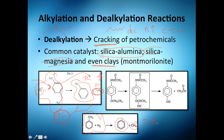Whether you do that conversion depends on the business. Toluene and benzene are both cheap, but if you can't sell enough toluene and the benzene market is strong, you convert it. And the methane byproduct can be used to generate energy for your plant — that's how you play with these reactions strategically.